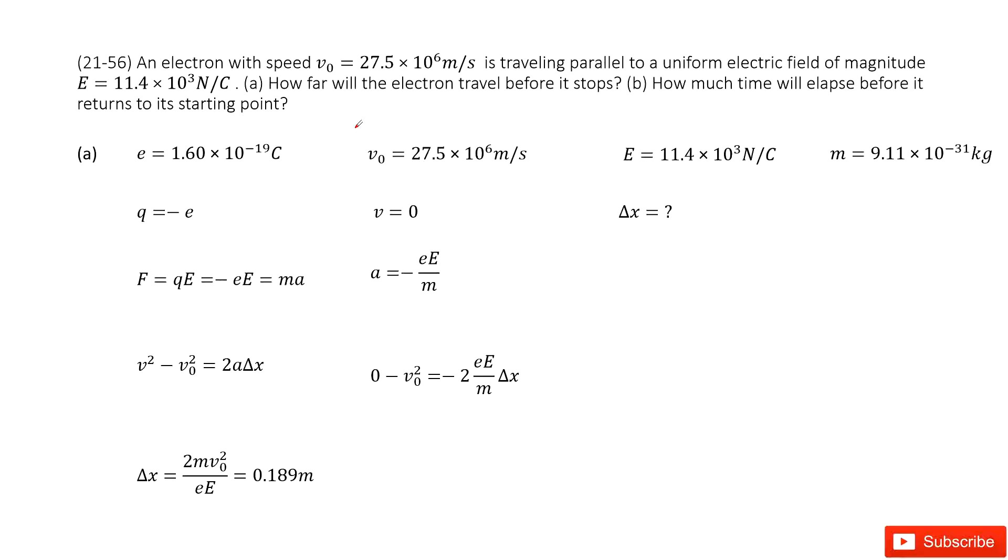Chapter 21 is about electric charge and electric field. We know one electron, we can write down the fundamental charge there. With initial speed, we write it there, and it travels parallel to a uniform electric field. So we write down the electric field, and we can also check the mass for the electron.